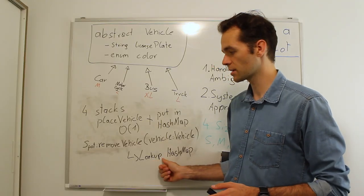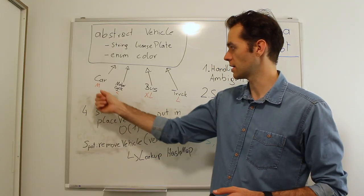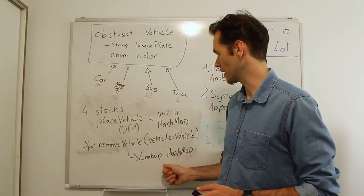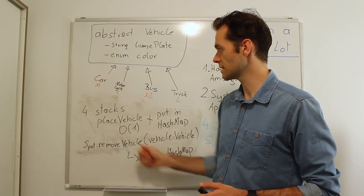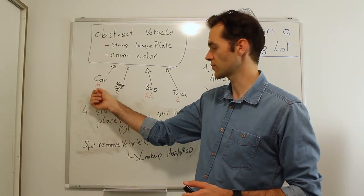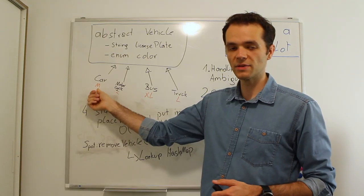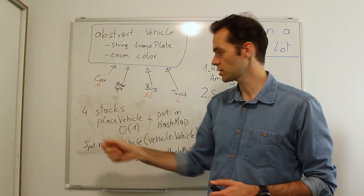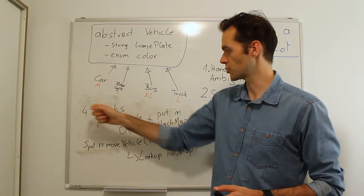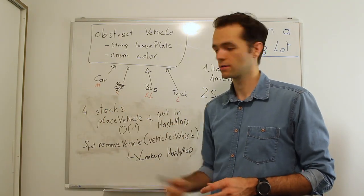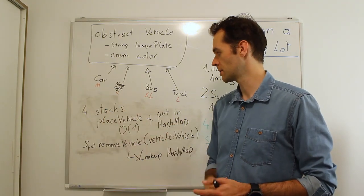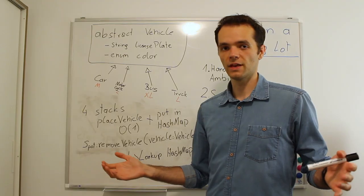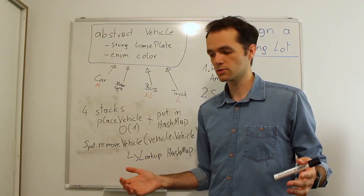Placing the vehicle — looking up a free spot — takes constant time because we check four stacks. We also insert into a hash map, which on average is also constant time. Removing the vehicle is just a lookup in the hash map using the license plate, giving us the spot. Then the last step is adding that freed spot back to the stack of the appropriate size.